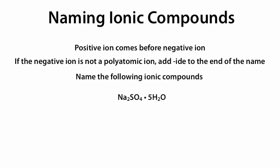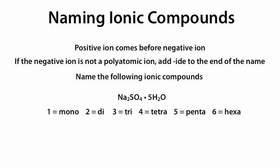Next we have Na2SO4·5H2O. Since we see ·5H2O, we recognize that as a hydrate, and we remember to add the prefix hydrate at the end. We name the compound normally: Na is sodium, SO4 is sulfate, and then pentahydrate from the 5H2O. We use the prefix pentahydrate for 5H2O.